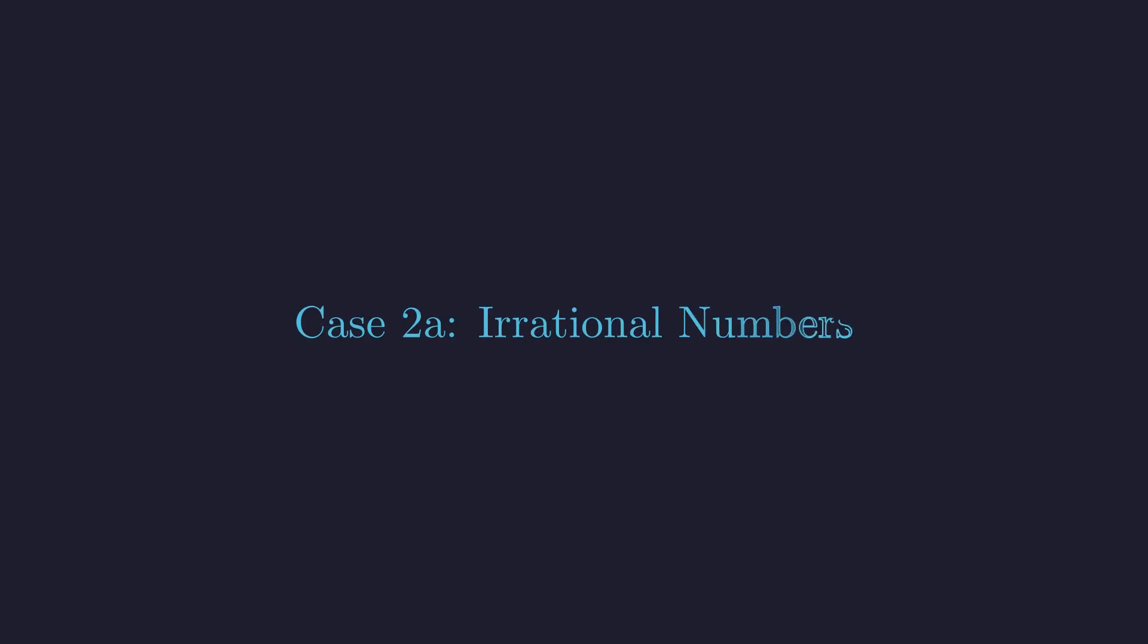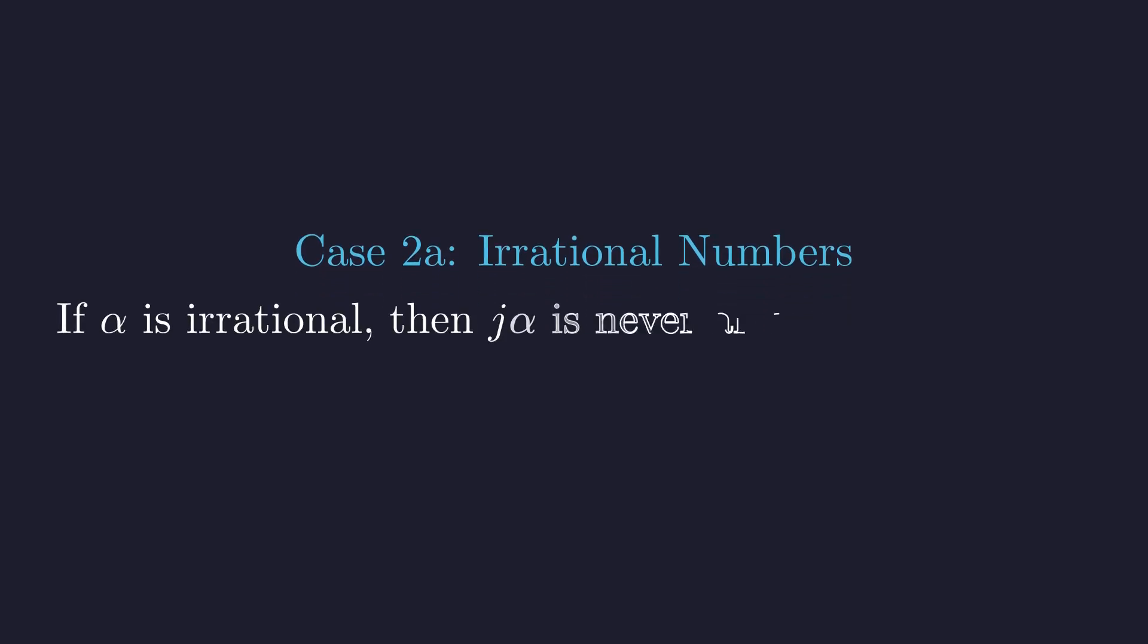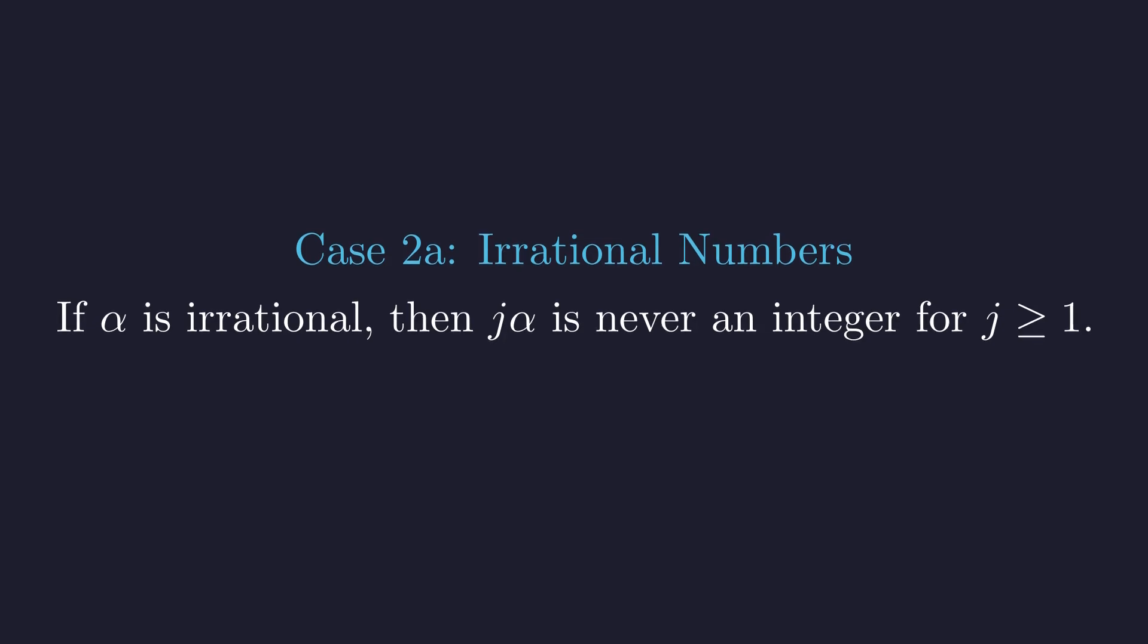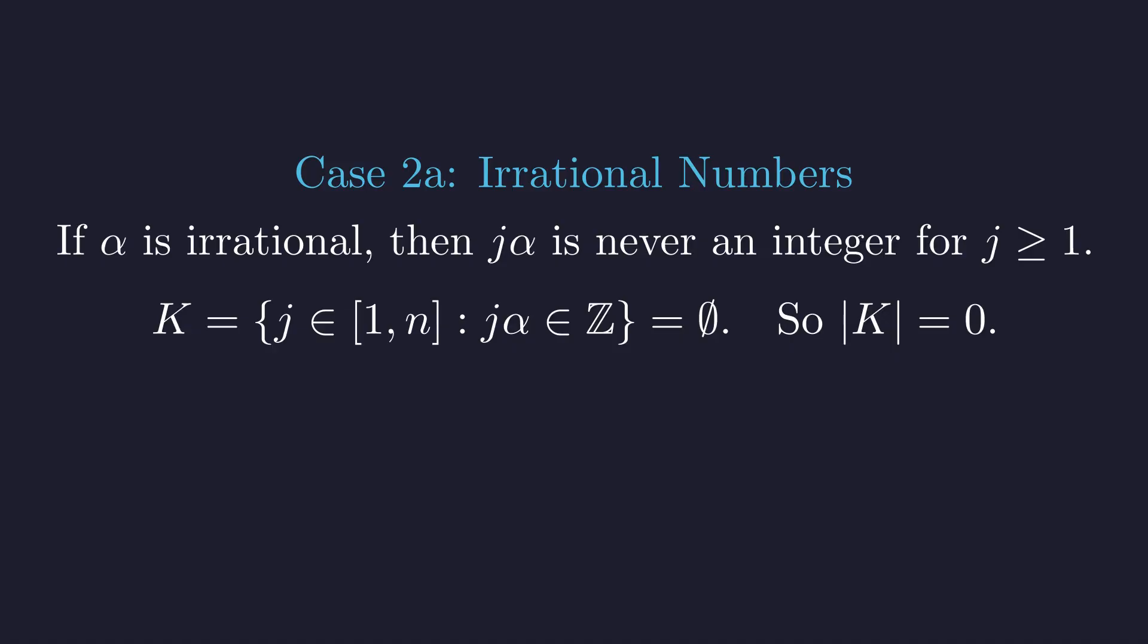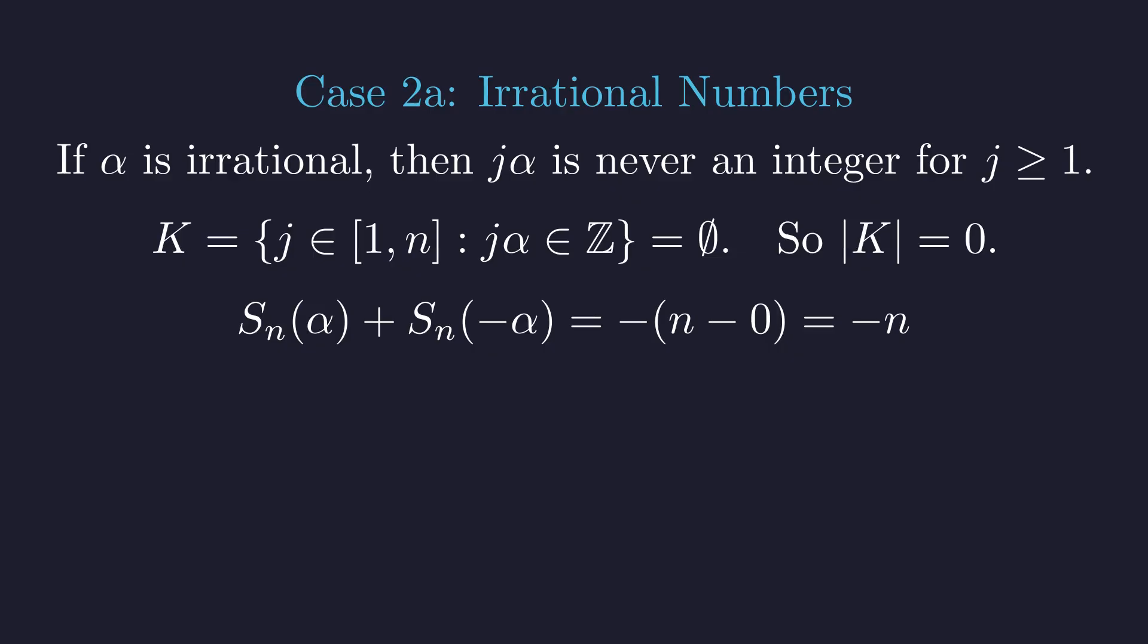First, let's assume alpha is an irrational number. If alpha is irrational, then j times alpha is also irrational for any positive integer j, so it's never an integer. This means the set k is always empty and its size is 0. Substituting this into our identity, we get that the sum of s sub n of alpha and s sub n of negative alpha is simply negative n.